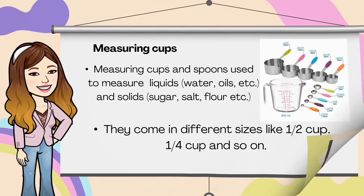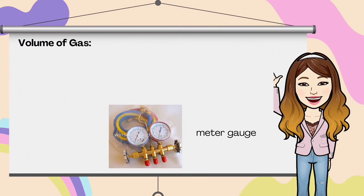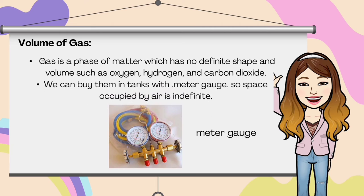There are steps to measure volume. First, make sure your eyes are level with the container you are measuring. Always measure volume in a graduated cylinder at the bottom of the meniscus. Read the measurement on the scale and record your data. When you measure solids like sugar, salt, etc., make sure the top is smooth before you read the volume. As for gas — gas is a phase of matter which has no definite shape and volume, such as oxygen, hydrogen, or carbon dioxide. We can buy them in tanks with a meter gauge, so the space occupied by air is indefinite.